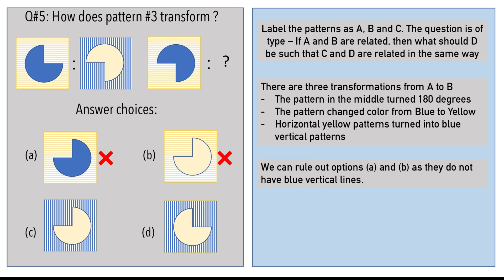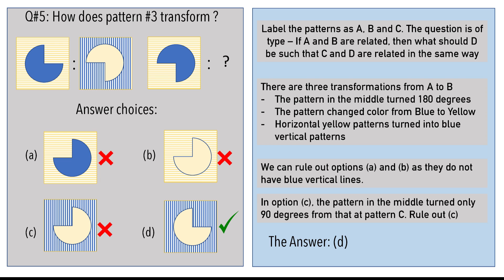We can safely rule out options A and B. The yellow lines in pattern 3 must have turned into blue lines in pattern 4. Hence, in option C, the circle-like pattern has rotated only 90 degrees from that in pattern 3.